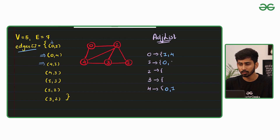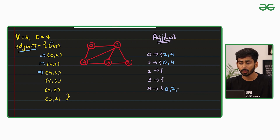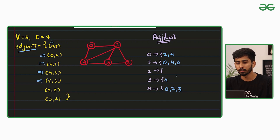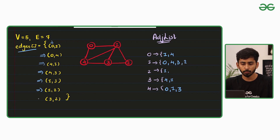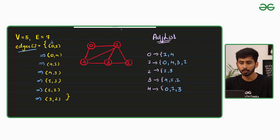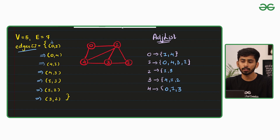For edge 4,3: at index 4 add 3 and at index 3 add 4. For edge 1,3: at index 1 add 3 and at index 3 add 1. For edge 1,2: at index 1 add 2 and at index 2 add 1. For edge 3,2: at index 3 add 2 and at index 2 add 3. This is the entire adjacency list for the given graph.